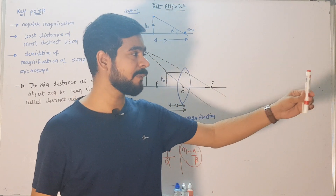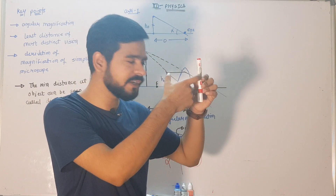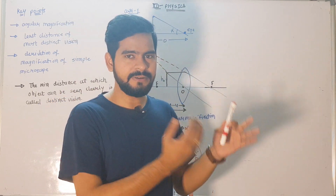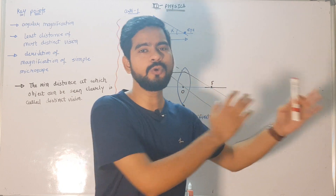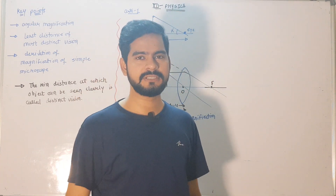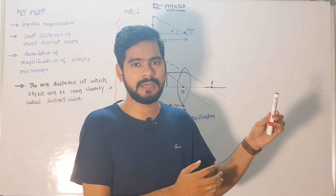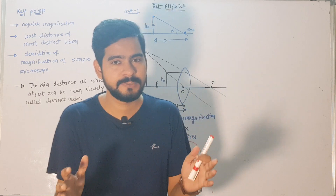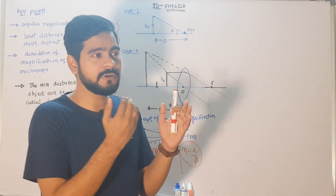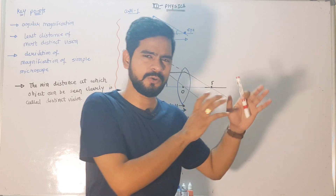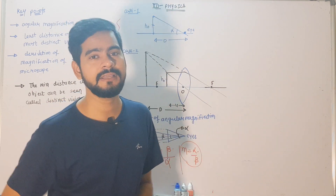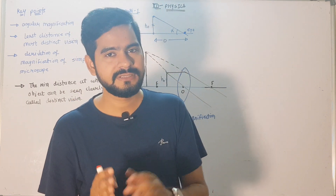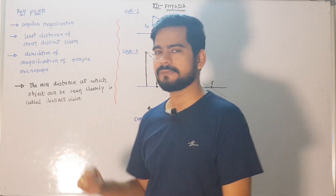So this is all about the minimum distance of most distinct vision. You can write down this definition. Generally for human eyes, capital D equals 25 centimetres — note that down. This is the distance at which you can see an object clearly. This is very important for understanding the microscope concept. I think now you understand both angular magnification and the minimum distance of distinct vision.